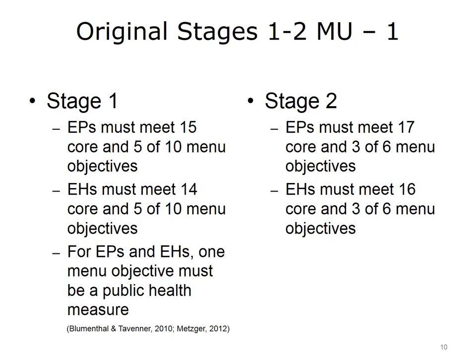Looking back at the original Stages 1 and 2: in Stage 1, eligible professionals had to meet 15 core and 5 of 10 menu objectives, while eligible hospitals had to meet 14 core and 5 of 10 menu objectives. These were essentially the same, although hospitals were not required to carry out electronic prescribing, since they tended to prescribe within their hospital by computerized provider order entry systems. It was also specified that one of the menu objectives needed to be a public health measure.